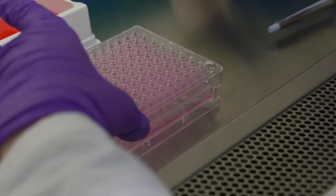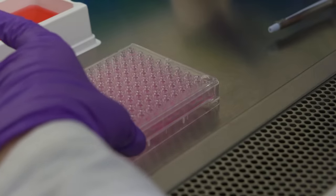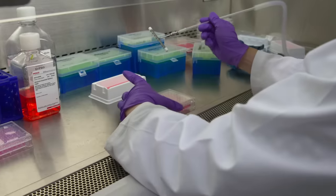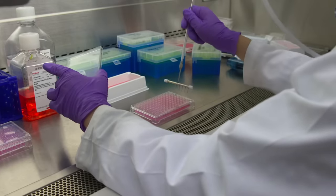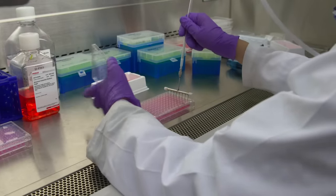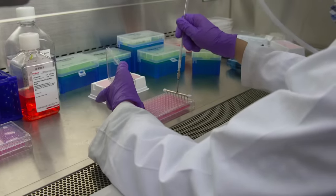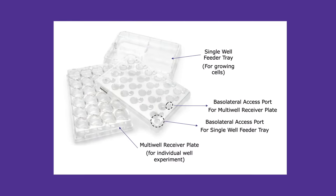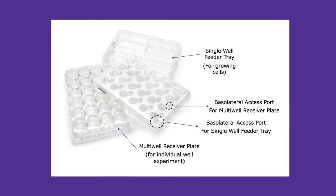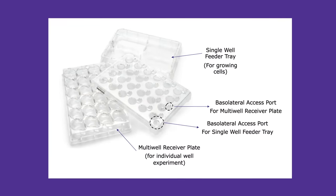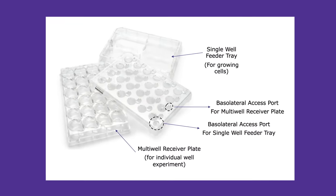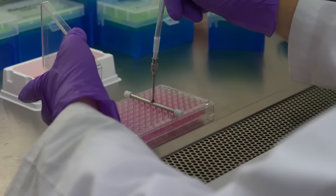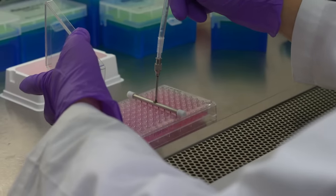Usually these are used for initial culturing of the cells. The other is a multi-well receiver plate, which enables individualized treatment of each well, just like a regular multi-well plate. Usually these are used for the actual assay where different wells need to be treated differently.